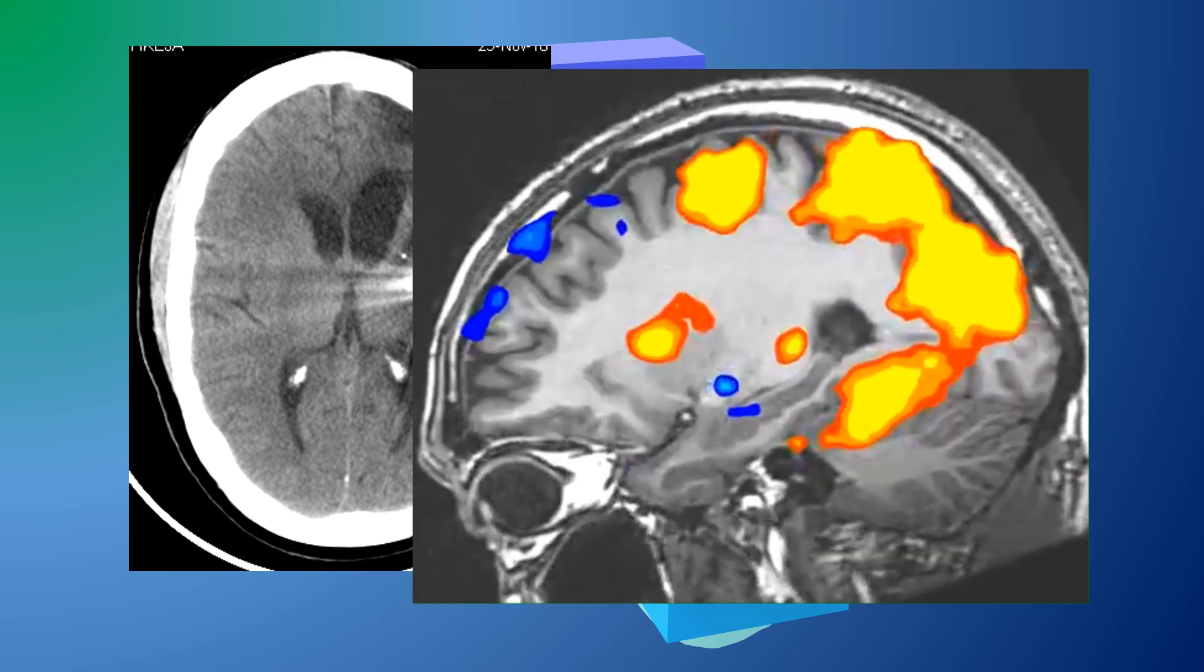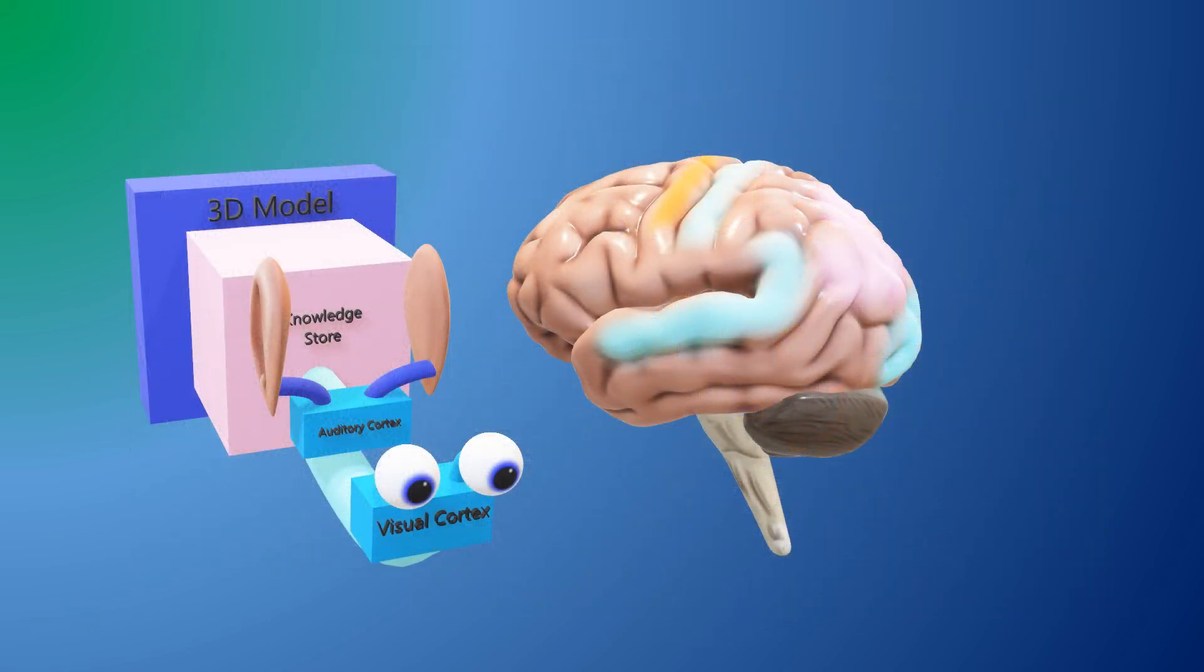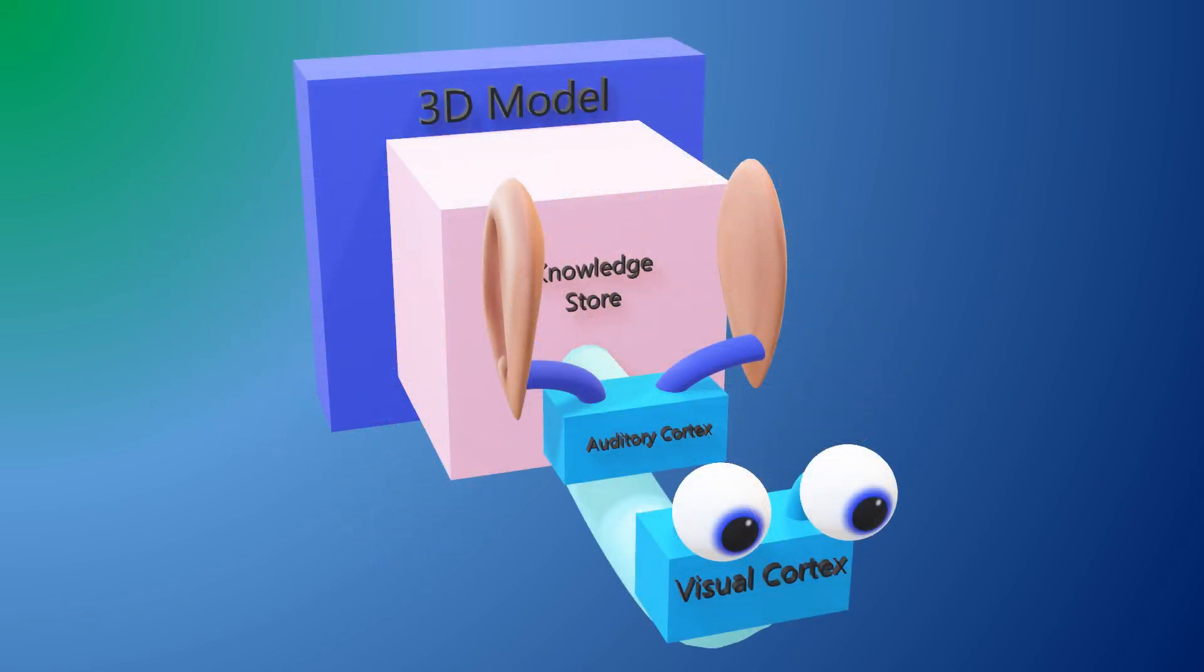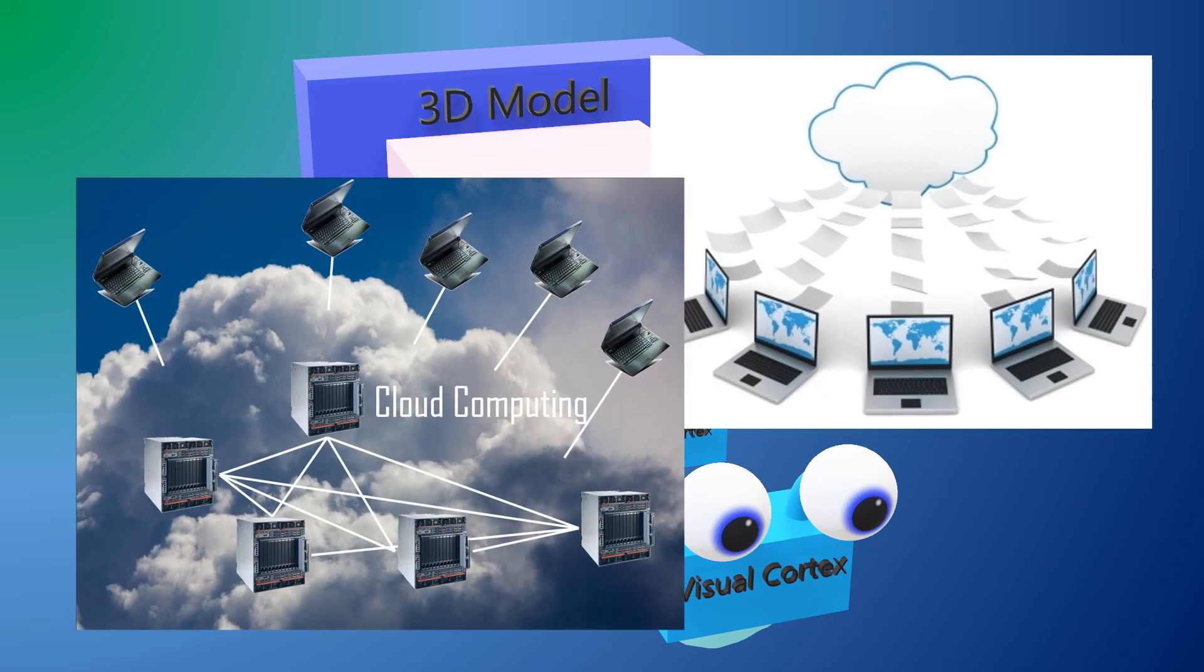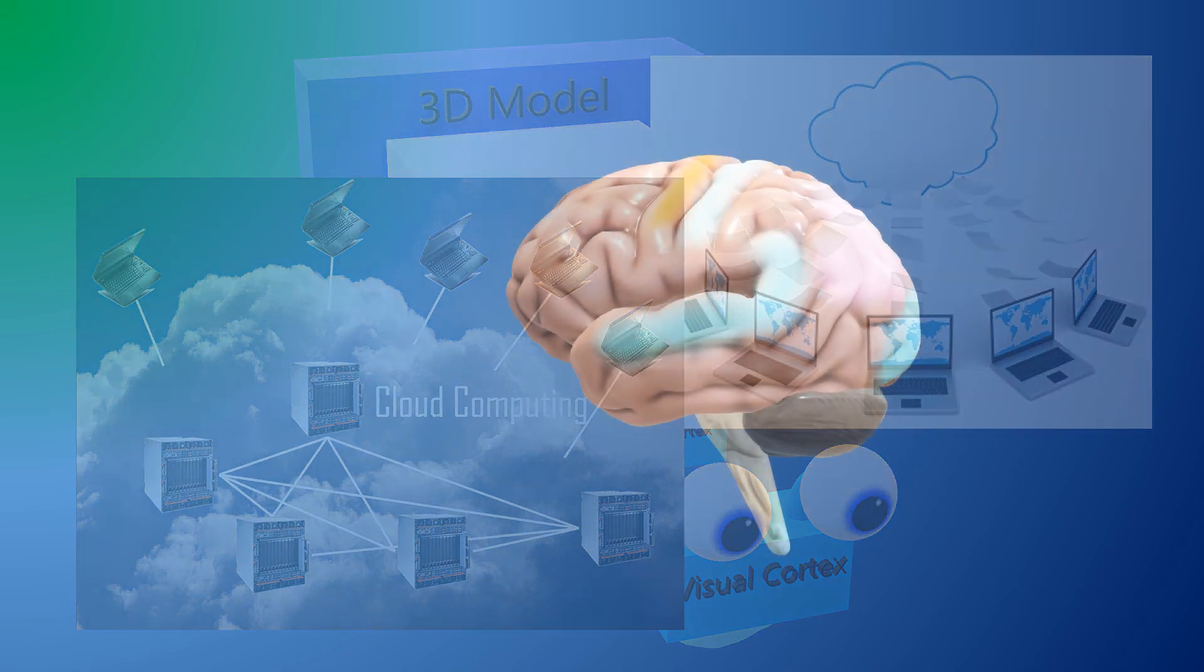We can identify some areas of brain function that correspond to boxes in the intelligence model, but beyond that we should consider any boxes to be conceptual, in the same way we could draw a block diagram of a cloud-based computer application where boxes need not correspond to functionality implemented on any specific processor.